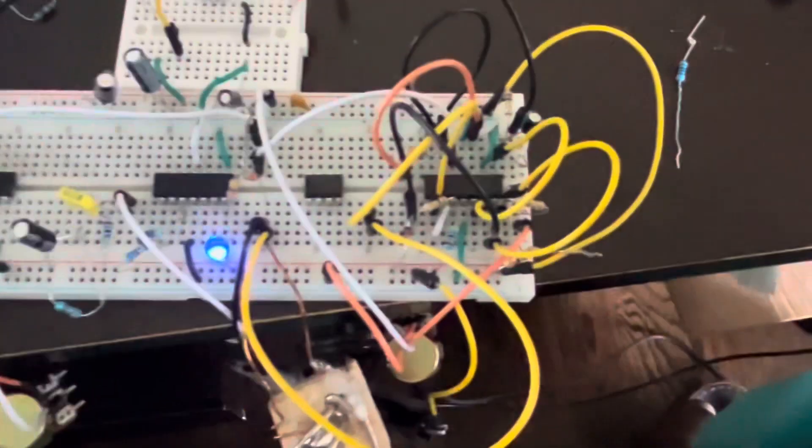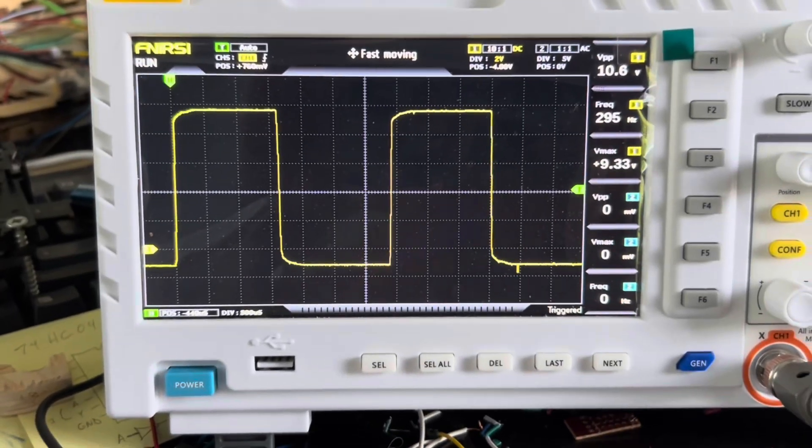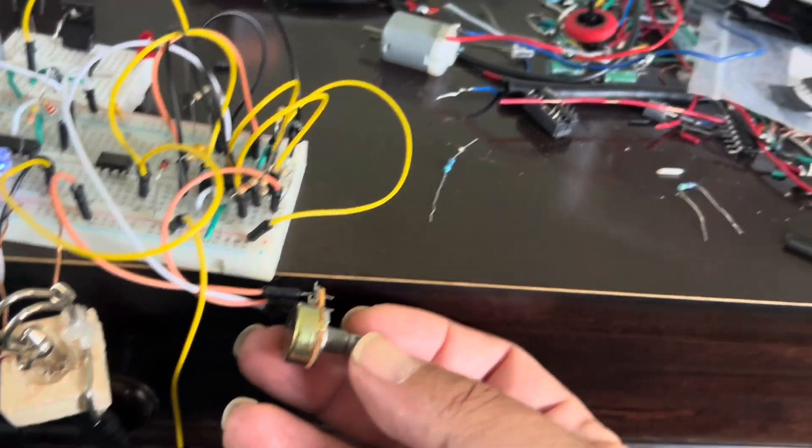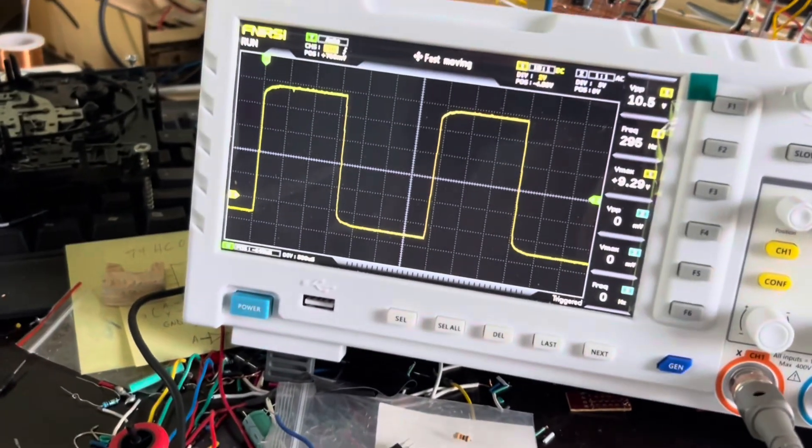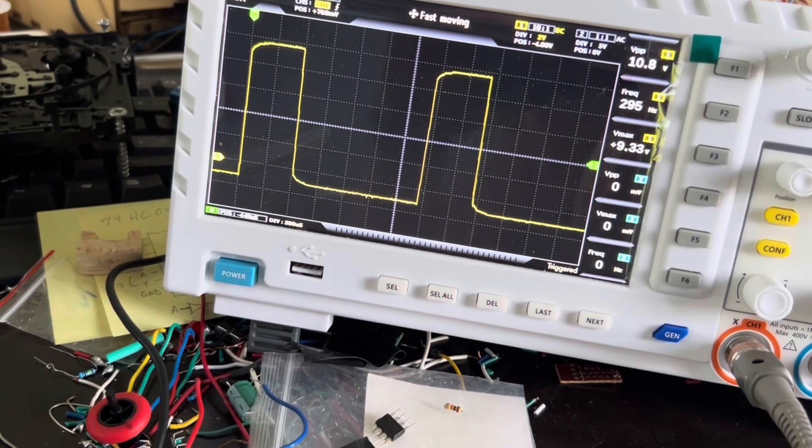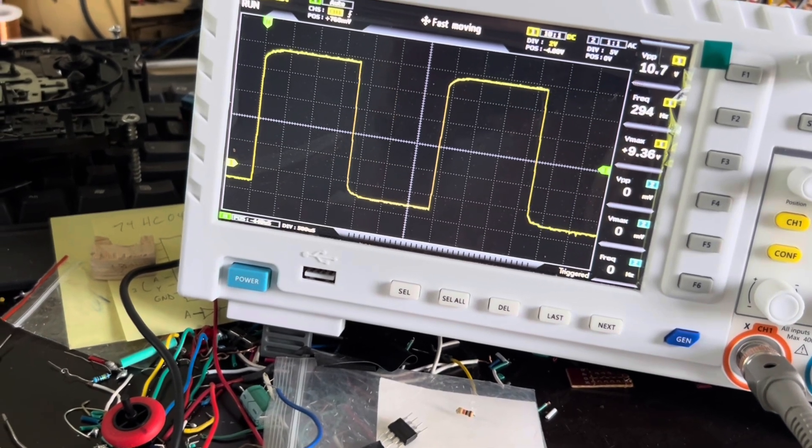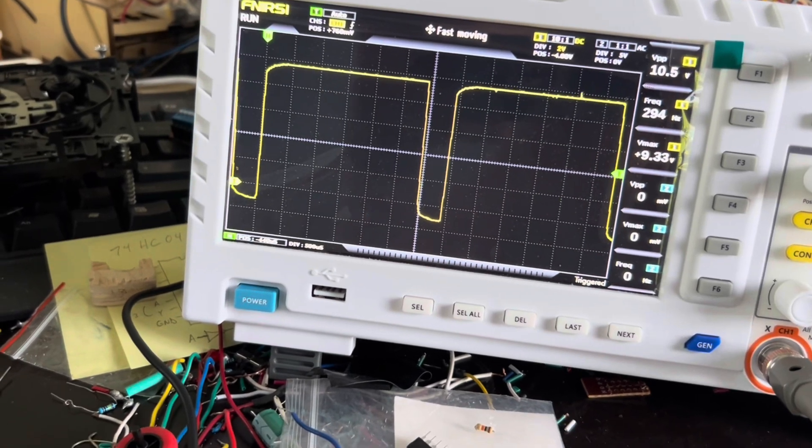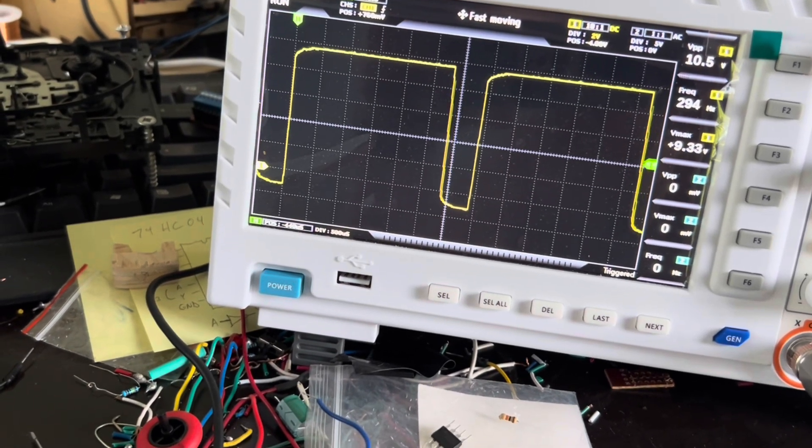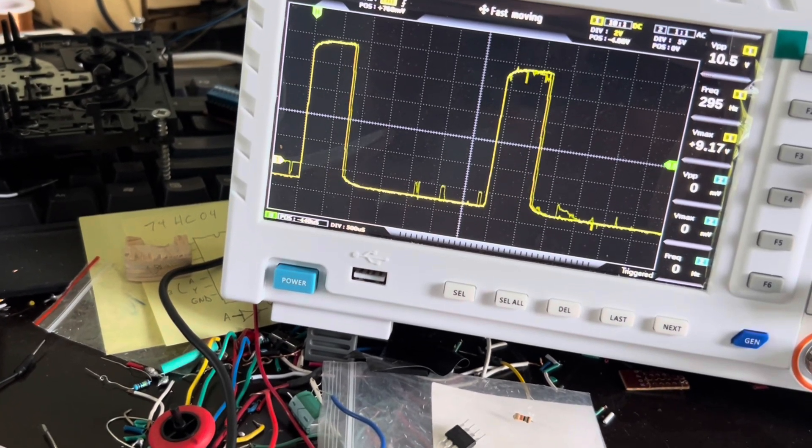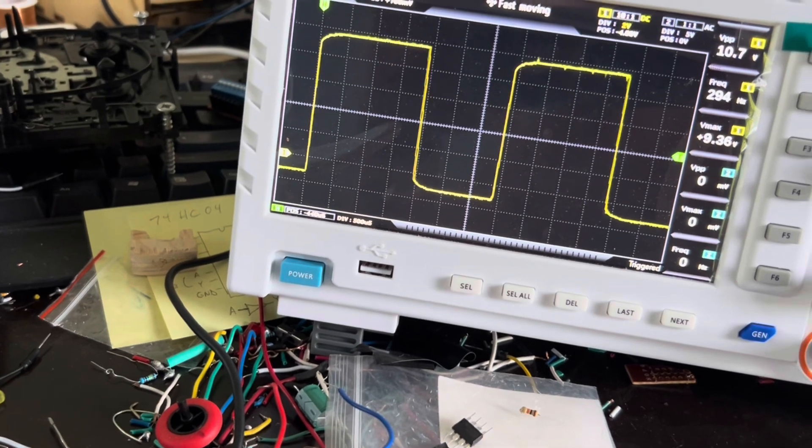And here it is on the oscilloscope. Now, based on the threshold voltage on this comparator, I can on the fly change the PWM duty cycle. And the range of that is all the way down to nothing and all the way up to almost complete.